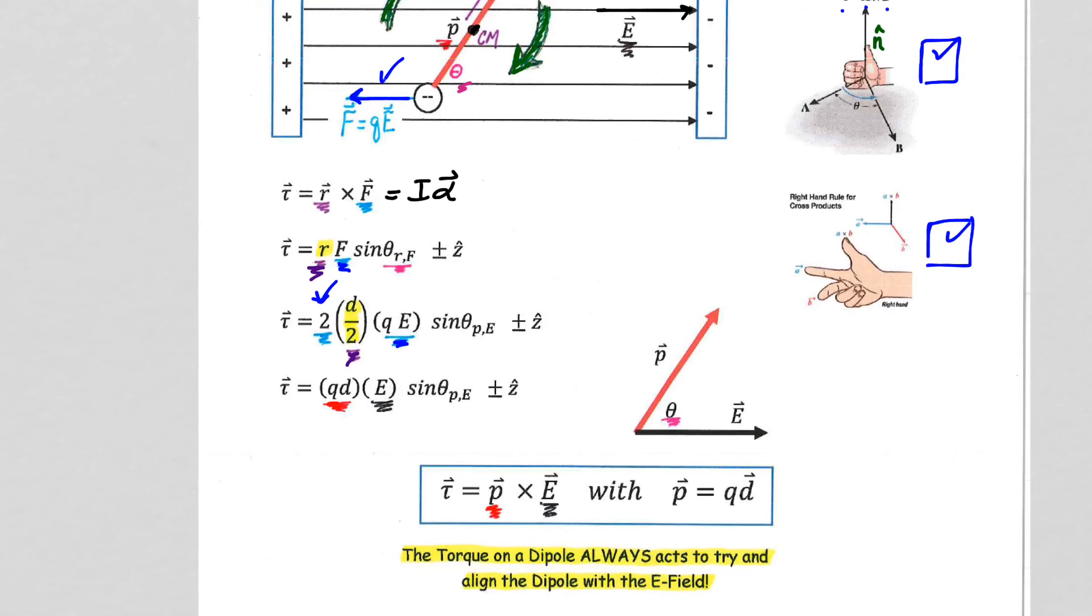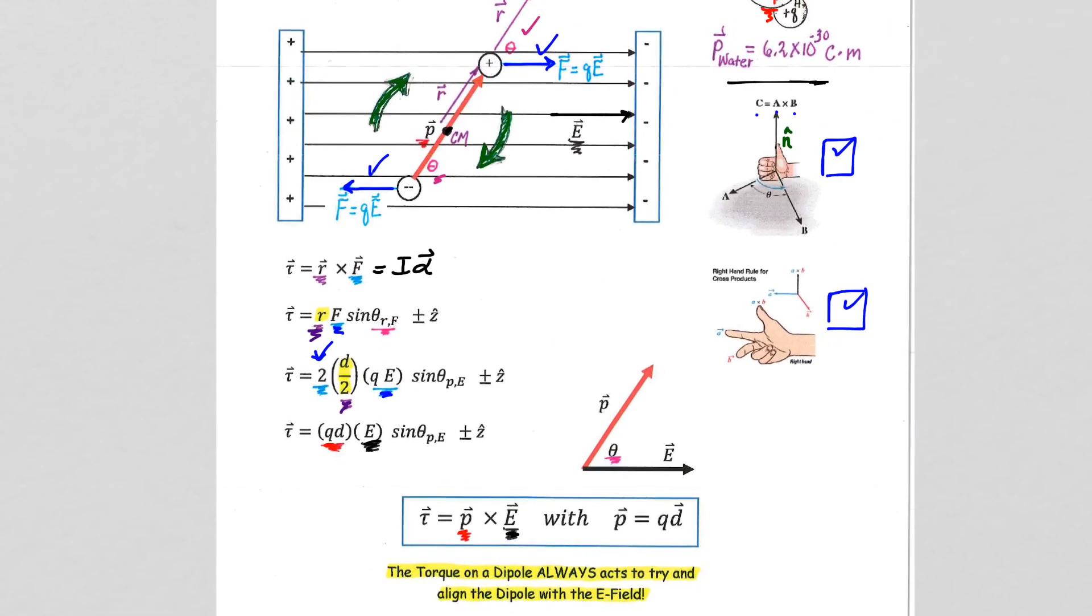We still, of course, have the vector E. So now we can rewrite our R cross F as P cross E, and what's really important is to absolutely accept that the angle theta here is the same angle theta in the R cross F. That's why the cross product can be rewritten as P cross E.